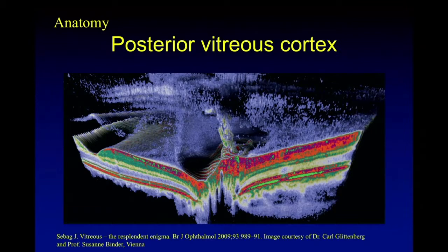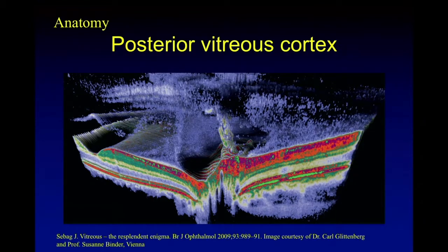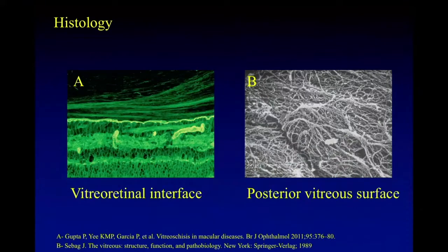When we look at the posterior vitreous cortex, there are structures — fibers — visible in this beautifully imaged OCT. Posterior vitreous is not just jello, and on electron microscopy, a lot of fibers can be seen at the vitreoretinal interface.